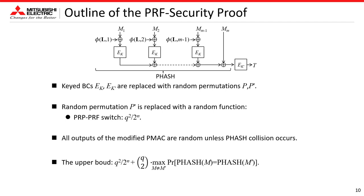This slide shows an outline of the PRF security proof. First, the keyed block ciphers are replaced with random permutations. Then, this random permutation is replaced with a random function; by the PRP-PRF switching, this switching term is introduced. The modified PMAC then has a hash-then-random-function structure, so all outputs of the modified PMAC are random unless a PHASH collision occurs. This means the upper bound is the PRF switching term plus the sum of the collision probability of PHASH for all combinations of messages.